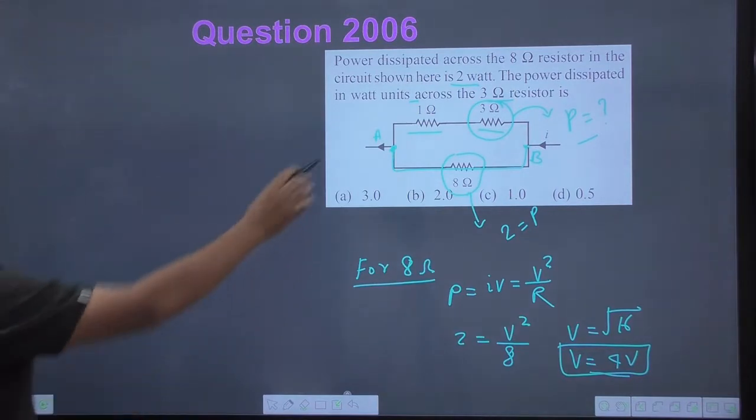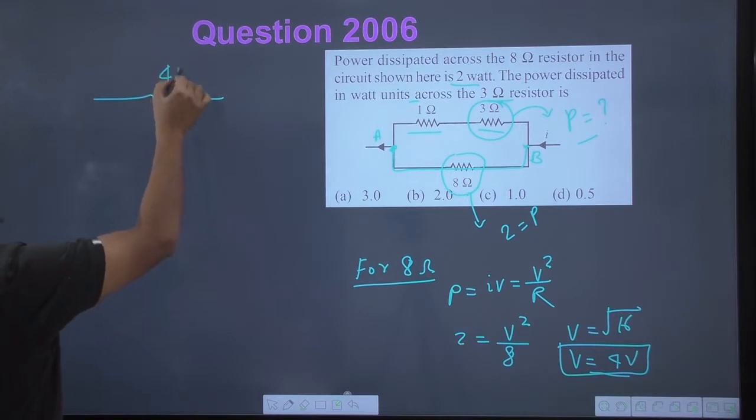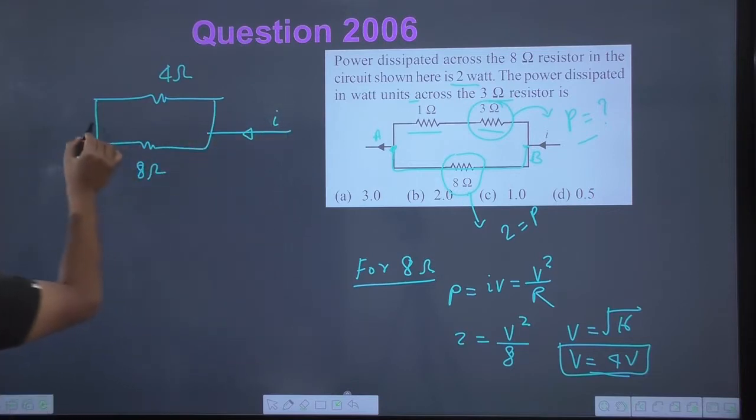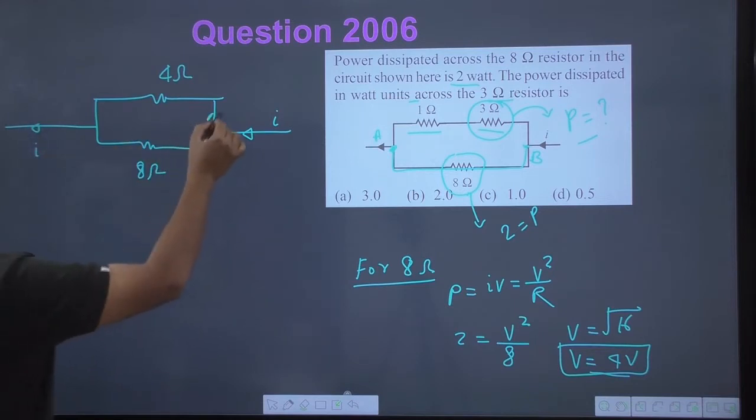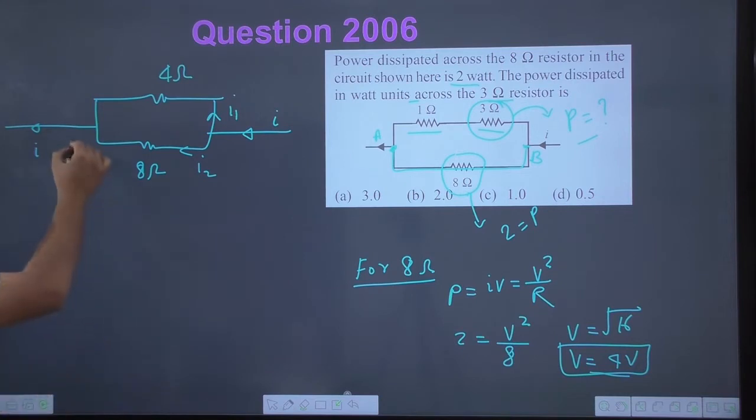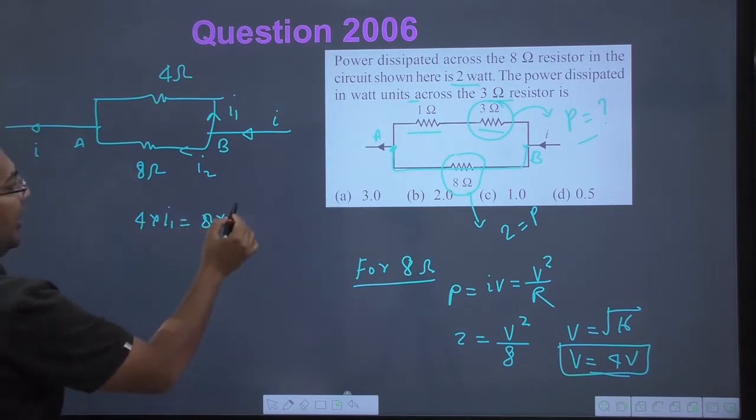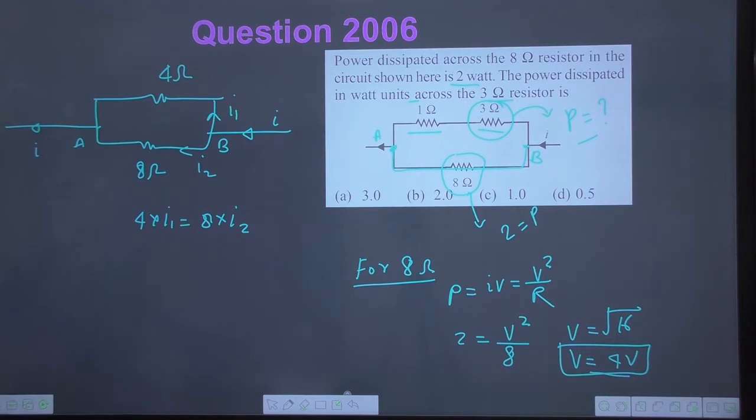One ohm and three ohm are connected in series, so 4 ohms resistance here, and the lower resistance is 8 ohms. The main current suppose is I, which splits here into I1 going this way and I2 going that way.